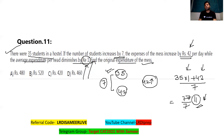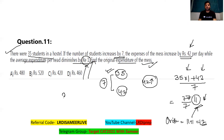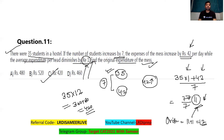The new average of 11 is one less than the previous average, so the original average must have been 12. The original expenditure of the mess equals 35 students × 12 rupees = 420 rupees (360 + 60). The original expenditure is 420 — option C is correct.